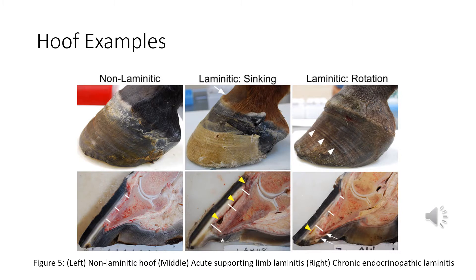On screen are hoof examples comparing a non-laminitic foot, a sinking case, and a rotation case. The non-laminitic foot has a normal exterior appearance. The supporting limb laminitis case shows sinking of the distal phalanx within the hoof capsule, clefting at the coronary band, detached lamellae leaving a gap, and hemorrhage between the hoof and dermal tissue. The chronic endocrinopathic laminitis case shows rotation of the distal phalanx, founder rings, increased distance from the base of the lamellae to the distal phalanx, hoof capsule serum, white line separation from detaching lamellae, crushed dermal tissue, and a solar abscess under the toe of the distal phalanx.